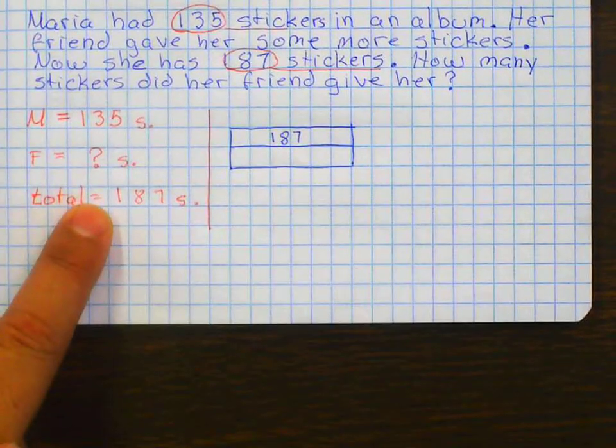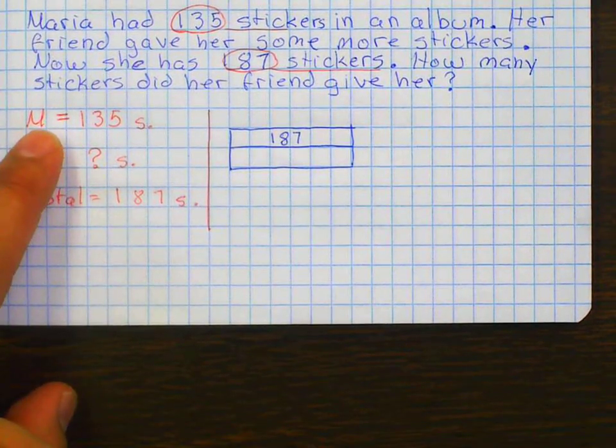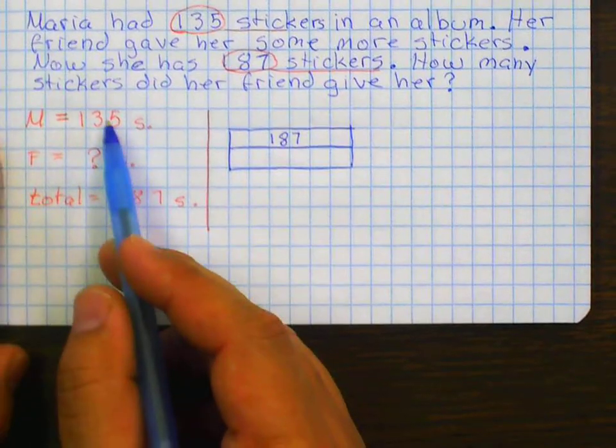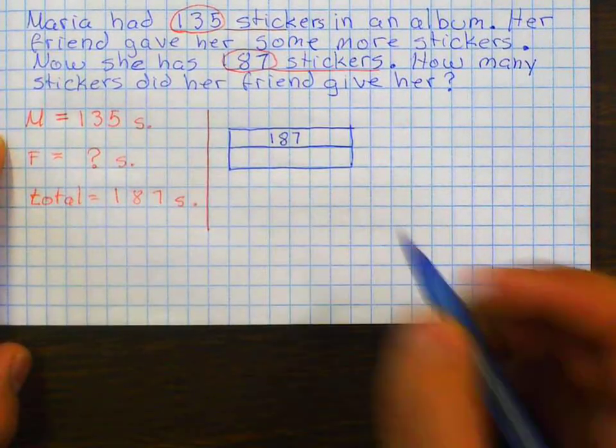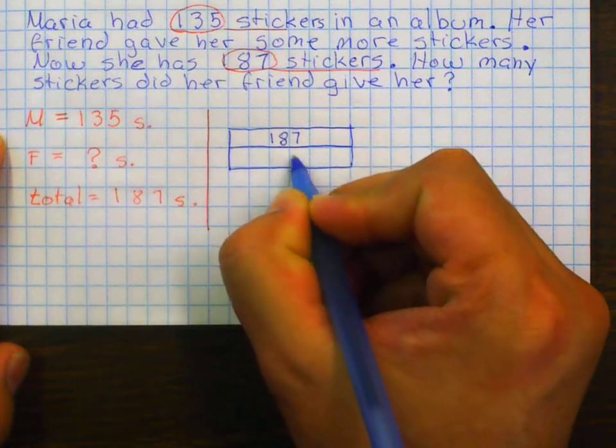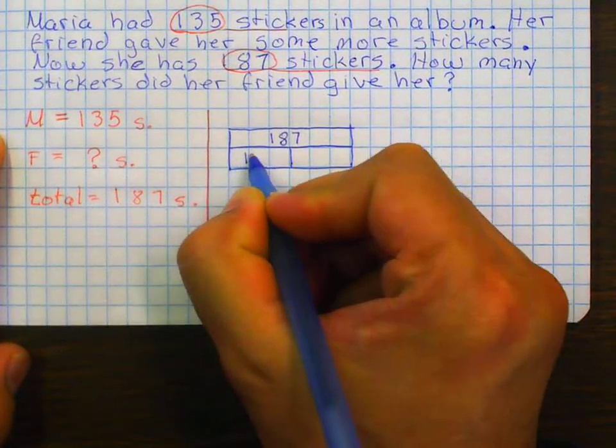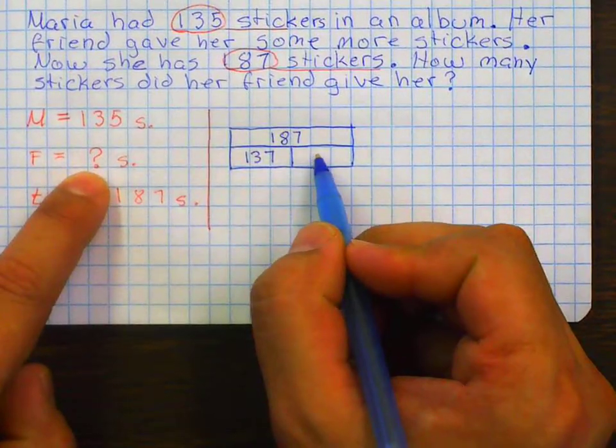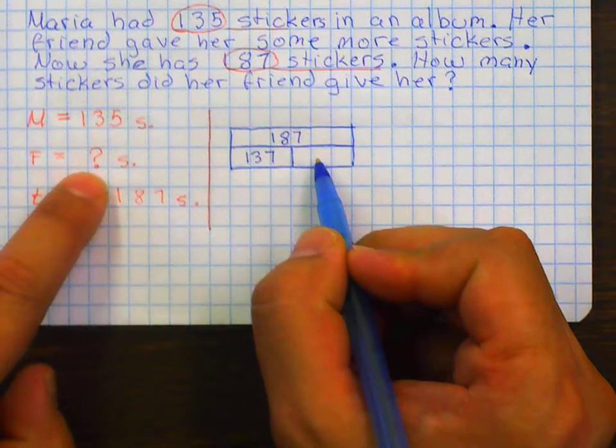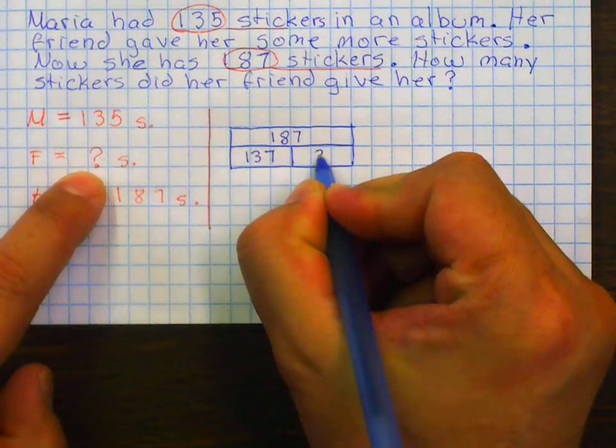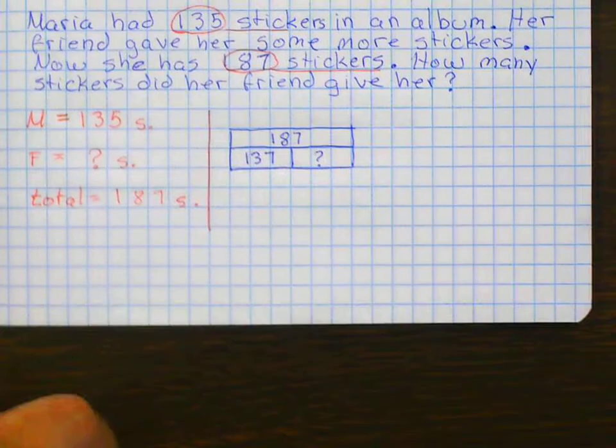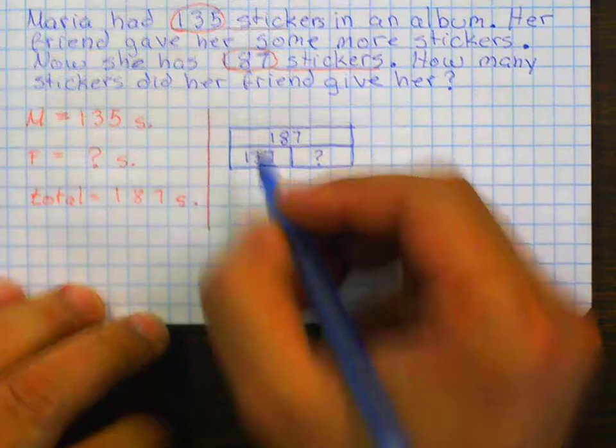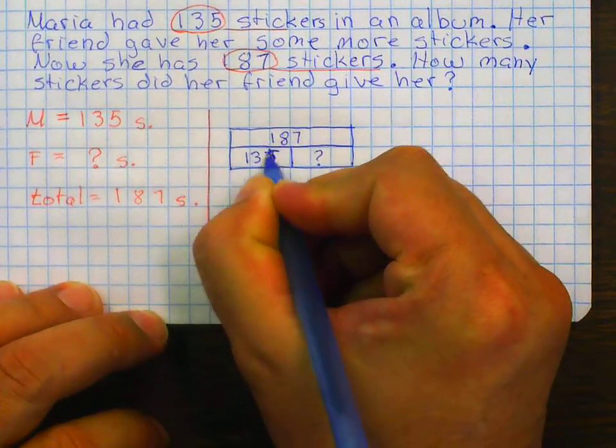I know how many she had before, or how many she had at the beginning. So that would be one of my parts, right? I know that she has 135. And I know that her friend gave her some more. Do I know how many more she gave her? No. So that's where my question is. Oh, 135. Thank you.